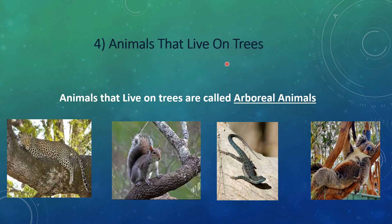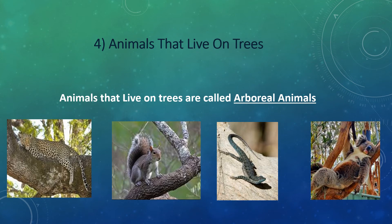The fourth category is animals that live on trees, also called arboreal animals. These animals mostly spend time on trees. They have strong arms and legs to climb the trees. They can also hold on to branches with their strong claws. Examples include squirrel, langur, monkeys, and tree lizards. Some types of monkeys have a very long tail, which they use as a fifth limb to hold on to branches while swinging from tree to tree.